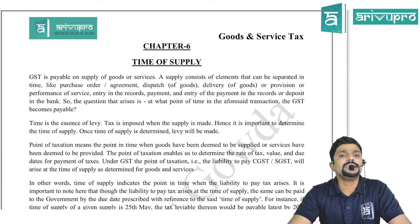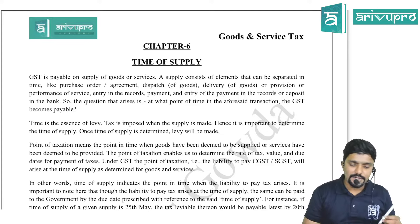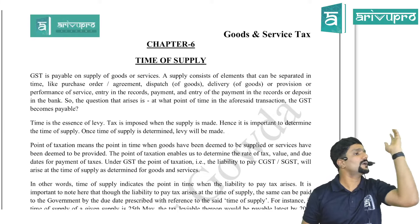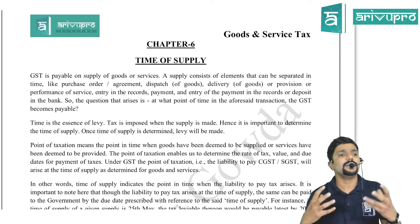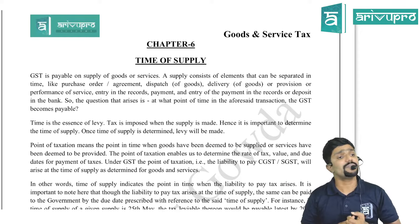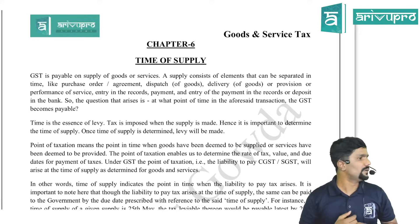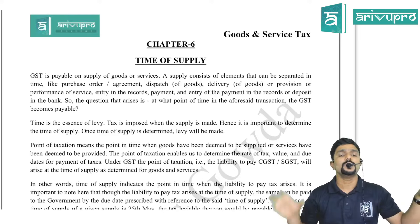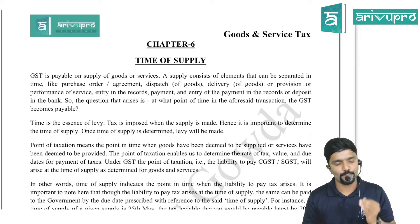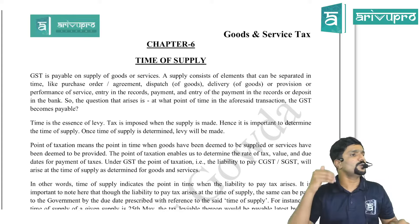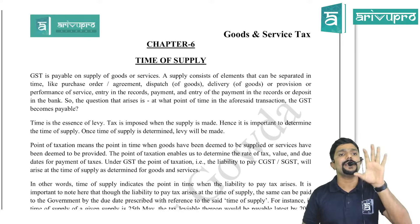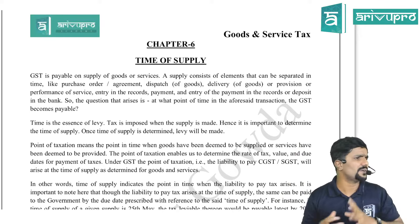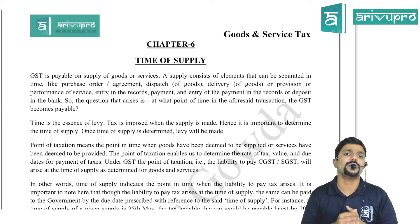Till now, what we have discussed: whether an activity or transaction is a supply or not — we decide as per Section 7 read with Schedule 1. Once an activity or transaction becomes a supply, we need to identify whether it is a supply of goods or supply of services as per Schedule 2. Next, from the supply we need to remove two things which are not taxable under GST: the negative list given in Schedule 3 along with Section 7(2).